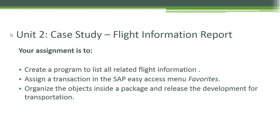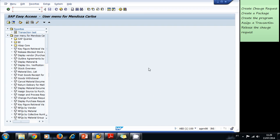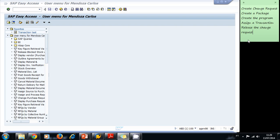In this case study, you need to create a flight information report. Your assignment is to create a program to list all related flight information, then assign a transaction in the SAP easy access menu favorites, organize the objects inside a package, and release the development for transportation. So basically, we're going to create a change request, create a package, create the program, assign the transaction, and finally release the change request.